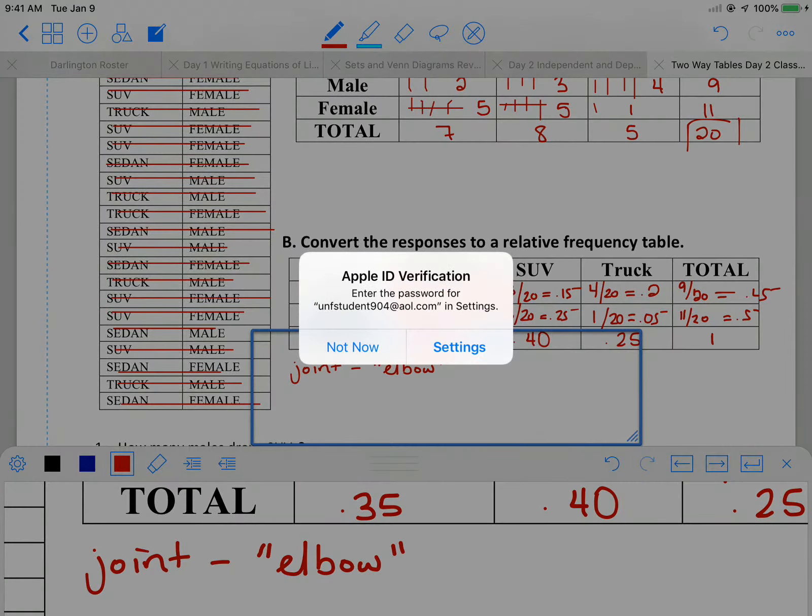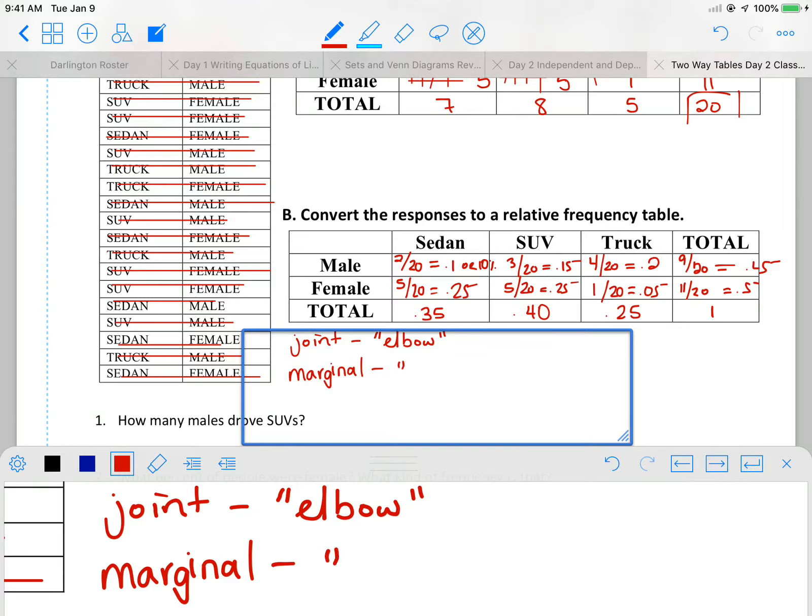Marginal. Marginal is like the margins on a paper. Those are your outside columns. Those are the total of my row and my columns. And then our last one is the old conditional. Think of that like being on restriction. Okay. If they're putting restrictions on my sample space, I am talking about conditional. So that's where it restricts my sample space. I'm no longer talking about all 20 people. I'm just talking about males. Or I'm just talking about people who drive SUVs.